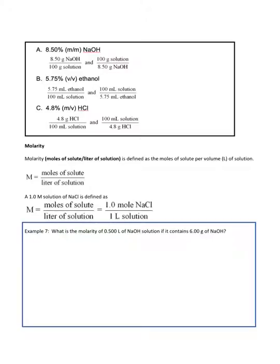Another way to measure concentration is molarity. Molarity is moles of solute per liter of solution. We abbreviate molarity with a capital M. Whenever you see a capital M next to a number for a solution, it is telling you the concentration in moles per liter. So a 1 molar solution of sodium chloride is 1 mole of sodium chloride for every 1 liter of solution.